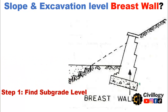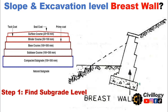Now let's find the excavation levels. To find the excavation level, in the first step we will have to determine the subgrade level. It is very important to determine the subgrade level because to lay down the foundation of a breast wall, it is important to place it over firm, compacted and stable ground. Foundation cannot be laid on loose earth. To find the subgrade level, you will need road structure details. This picture shows the road cross section, and the thickness of each layer is mentioned in it.